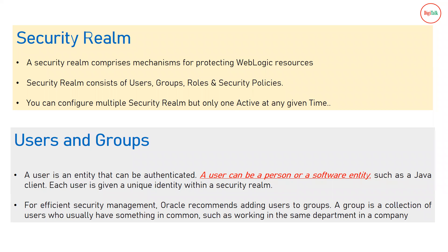In an organization there are different teams with different kinds of access. For example, a development team needs deployment access, while a separate operations team only handles starting and stopping applications — that is typically done by support teams. There may also be a monitoring team. So different teams need different users with certain privileges.